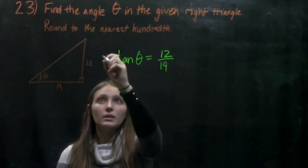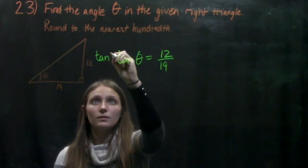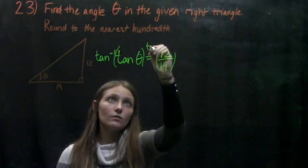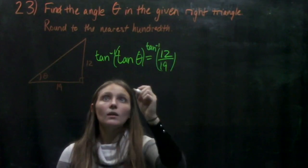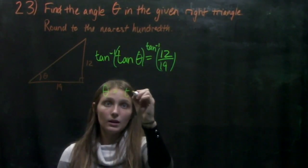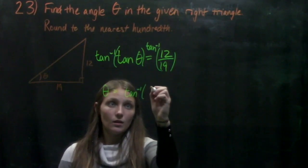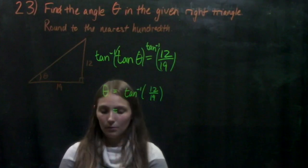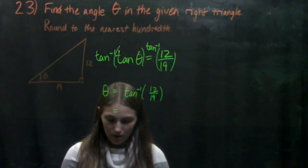We can take the inverse tangent of both sides of this, and then we're going to also take the inverse tangent of this one, so that we get theta equals the inverse tangent of 12 divided by 19. And when we plug that into our calculators,